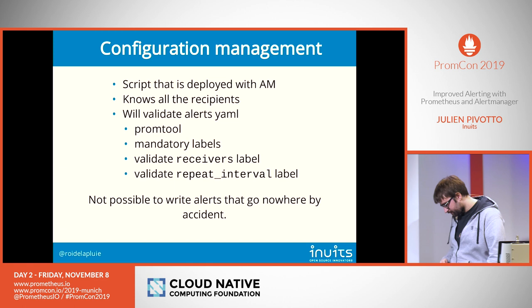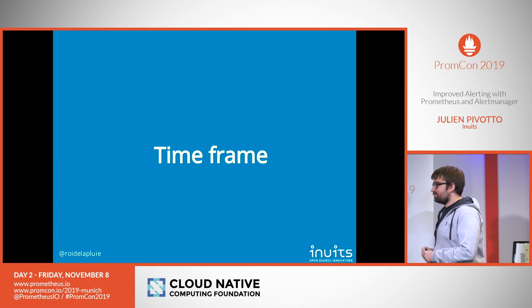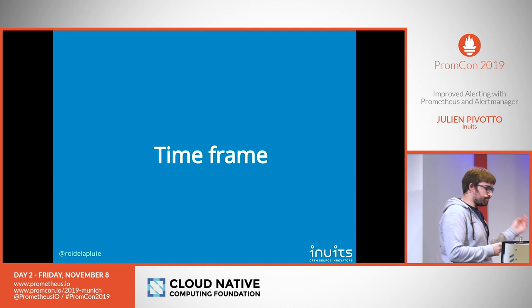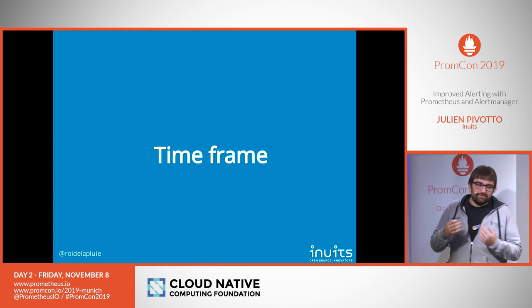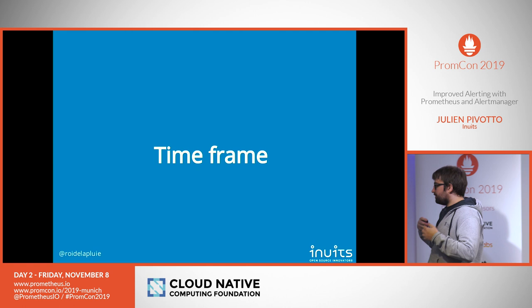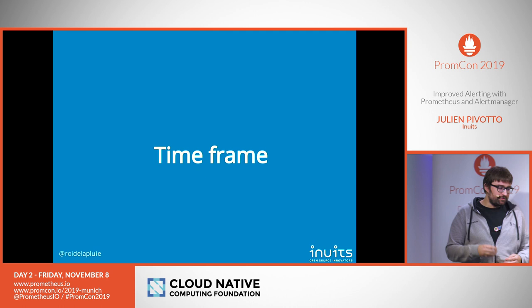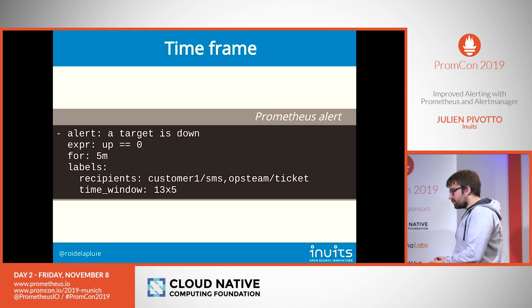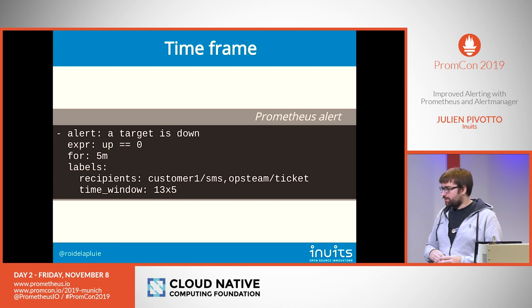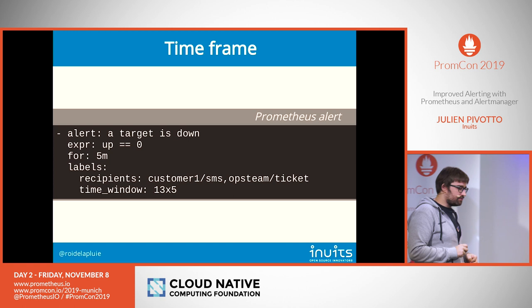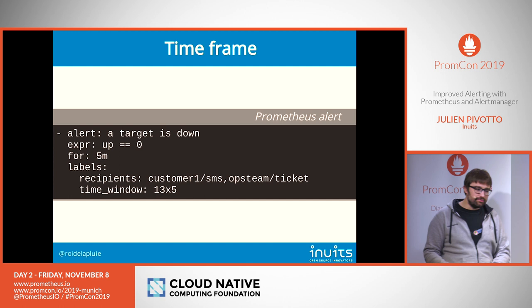Next topic: time frames. Some services are not open on Sunday, some not on Saturday afternoon. It's annoying to alert people during those times. Some processes have an SLE of 24 hours — maybe you shouldn't wake someone up at 3am on a Sunday morning when fixing it at 10am is fine. We want to specify the time window directly in the alerting rule — for example, 13 hours a day, five days a week, or 24 hours, seven days a week — independently for each alert.